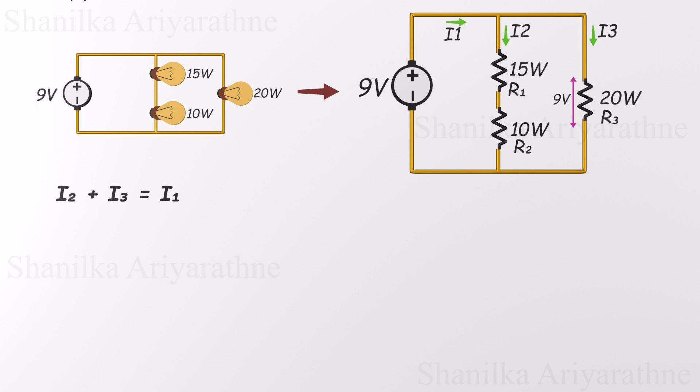That means the same current flows through both, but the voltage is divided between them. Since they share the same loop, the voltages across them, which we'll call V1 and V2, must add up to the total supplied by the battery. In other words, V1 plus V2 equals 9 volts. We may not yet know exactly how that 9 volts is divided, but this relationship gives us a crucial constraint to work with as we move forward.